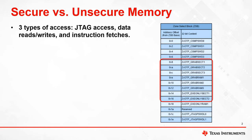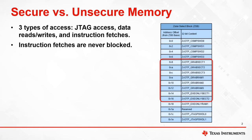There are three types of memory access that are affected by security: instruction fetches, JTAG access, and data reads or writes. Instruction fetches are always allowed, regardless of the security status of that region. There are three types of security status for each memory region: unsecure, secured by one of the two zones, and execute-only protection from one of the two zones.